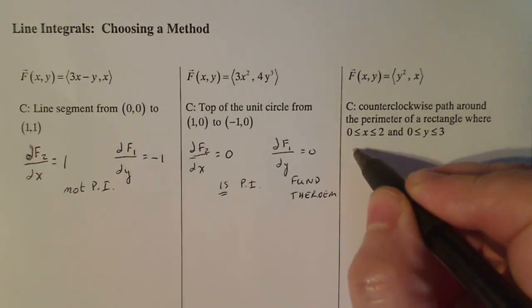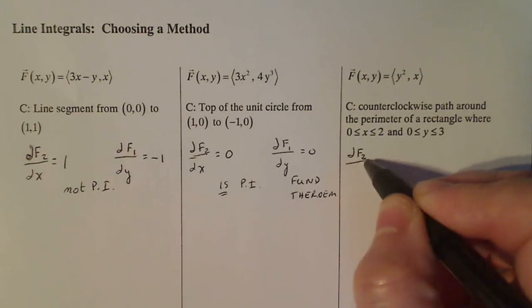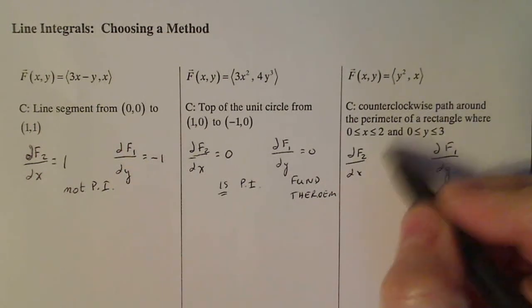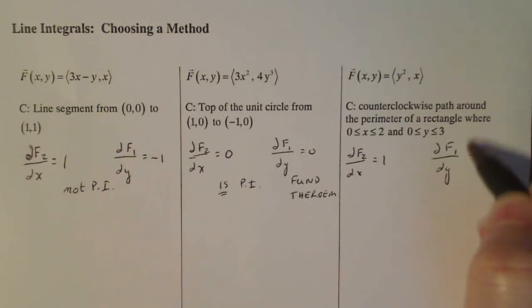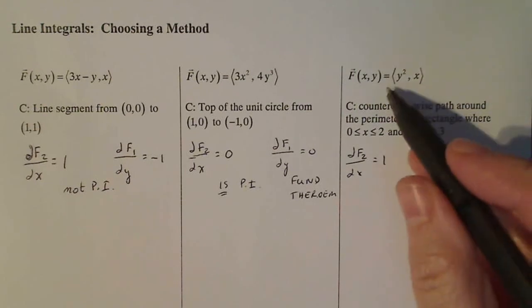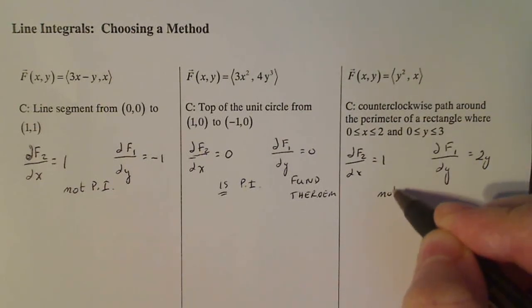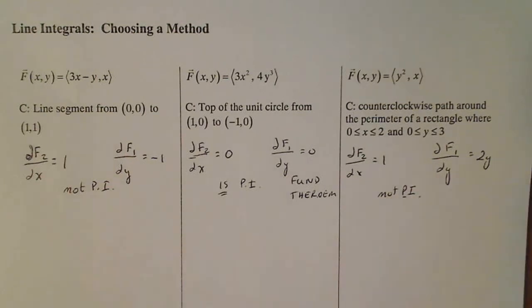And this last one, I'm going to do the partial of f2 with respect to x, and the partial of f1 with respect to y. Partial of f2 with respect to x is 1, partial of f1 with respect to y is 2y, so this is also not path independent. So the only one we can use the fundamental theorem on right now is the middle one.